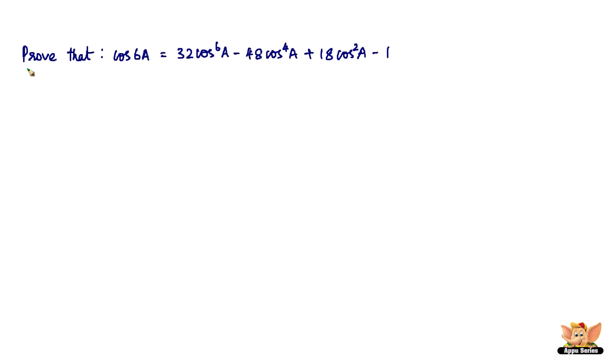We've got a problem here which reads like this: prove that cos 6a equals 32 cos⁶a - 48 cos⁴a + 18 cos²a - 1.